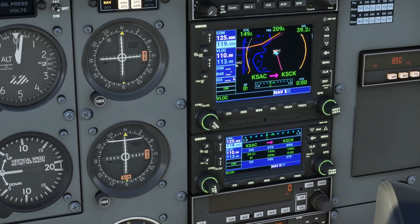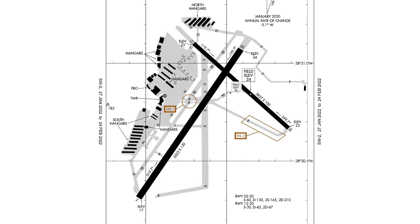Let's think about what we want to say to the ground controller. First, let's think of which runway we'll use. The ATIS said runways 20 and 30 are active, with winds calm, so there's no reason we wouldn't get either runway assigned. Runway 20 is a longer runway and larger traffic would probably get it. Although we could use runway 30 in our Cessna, it would be an intersecting runway and a further taxi from our FBO at Executive Jet Center. So let's expect runway 20.